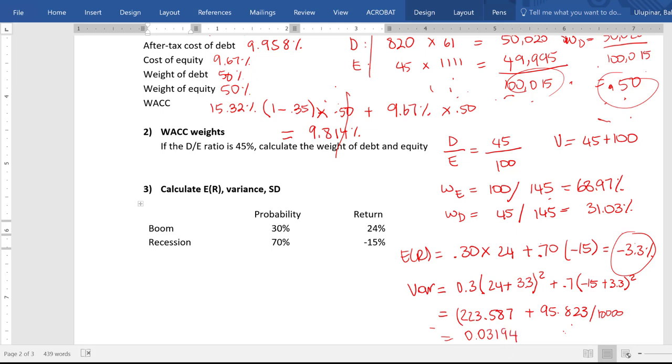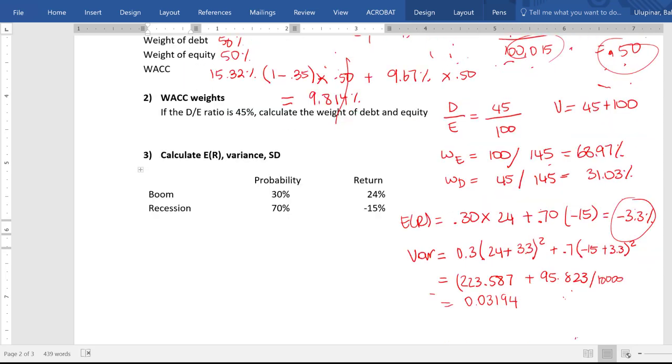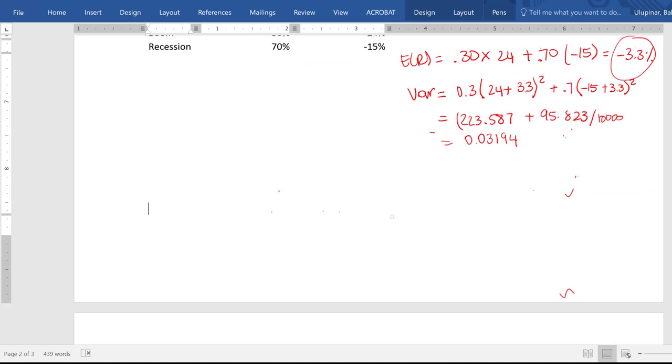So when you take the square root of this number, it will be our standard deviation. And it is equal to 17.87%.